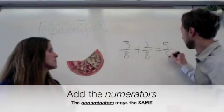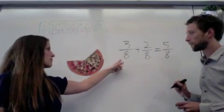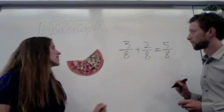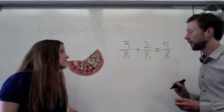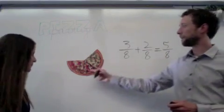The number on top is the numerator, the number of pieces you have. The number on the bottom is the denominator, the number of pieces that make a whole. Okay, so I add three plus two and get five eighths. That makes sense. Perfect.